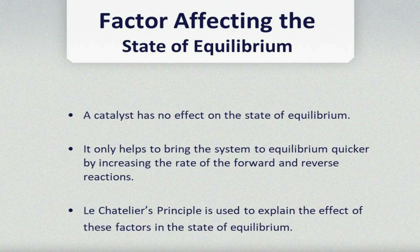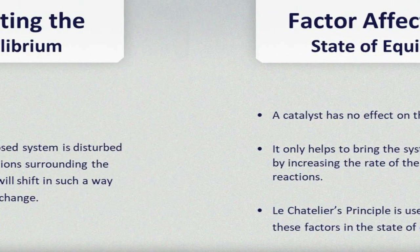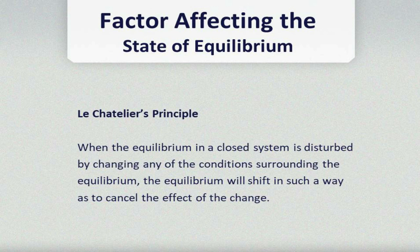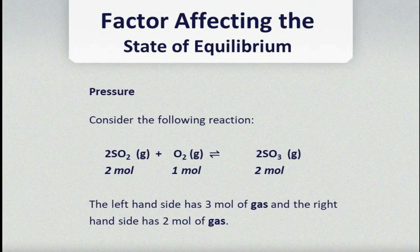So we will now look at what we refer to as Le Chatelier's Principle. He was a French scientist who did an analysis on the state of equilibrium of a given reaction and came out with this principle, so we named it after him. Le Chatelier's Principle is used to explain the effect of these factors on the state of equilibrium. When the equilibrium in a system is disturbed by changing any of the conditions, the equilibrium will shift in such a way as to cancel the effect of the change.